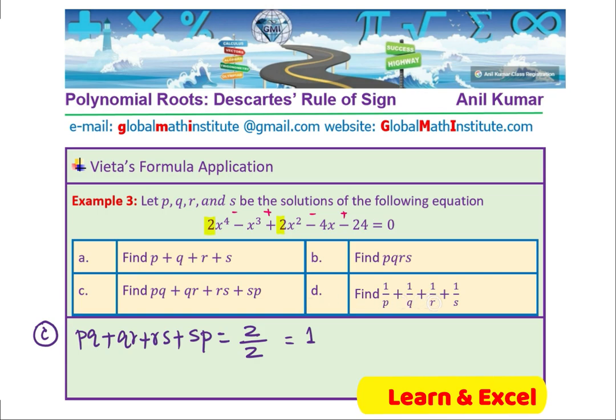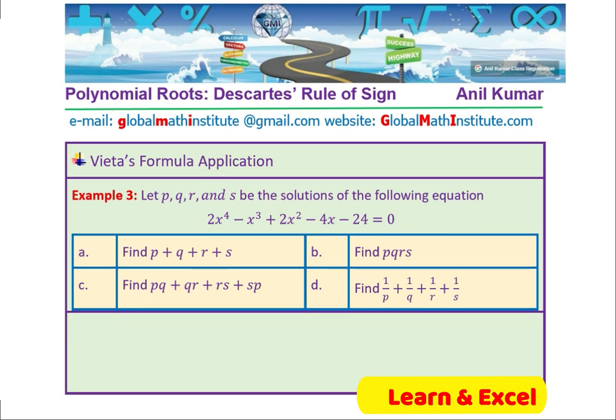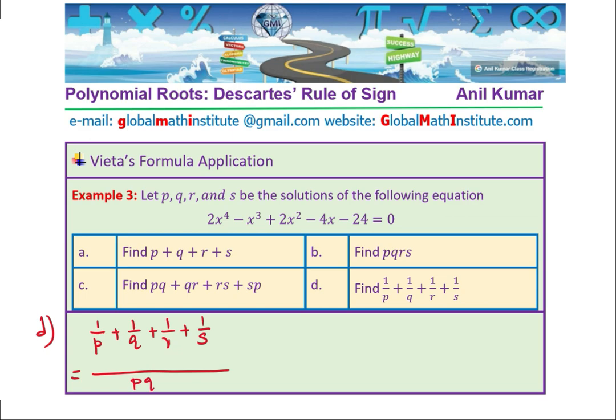Now let's do part D, where we are taking the ratio of these. I hope by now you have understood the concept. Let's see what is part D. In D, we have to find 1/p + 1/q + 1/r + 1/s, the reciprocal sum. You can always take a common denominator, which is the product pqrs, and then you get the symmetric sum: qrs + prs + pqs + pqr. That is the third symmetric sum.